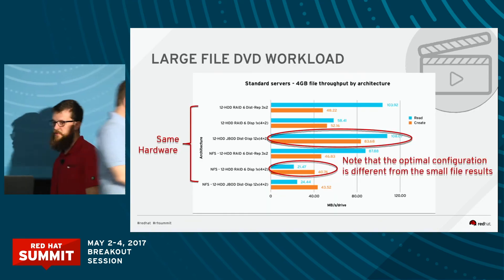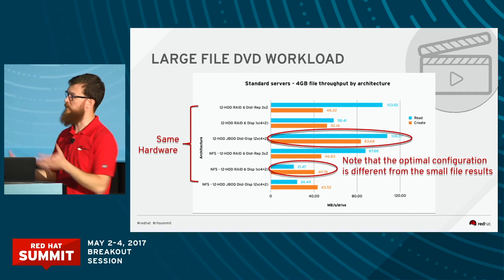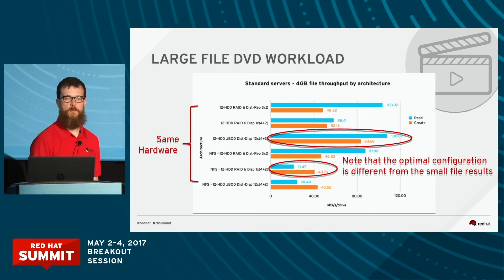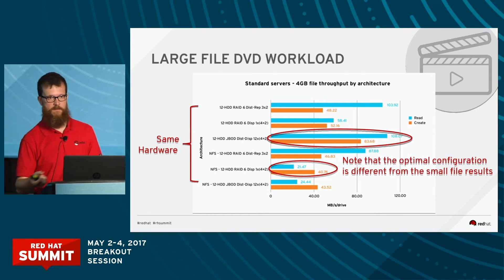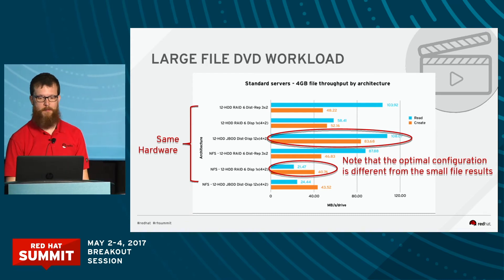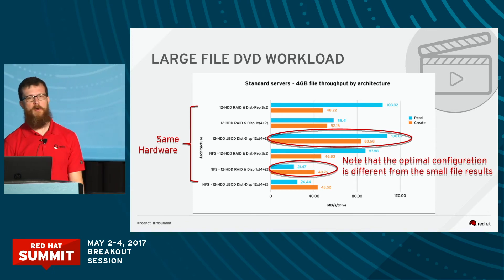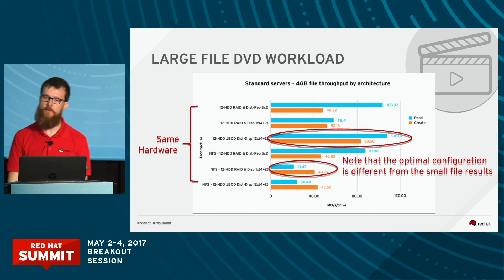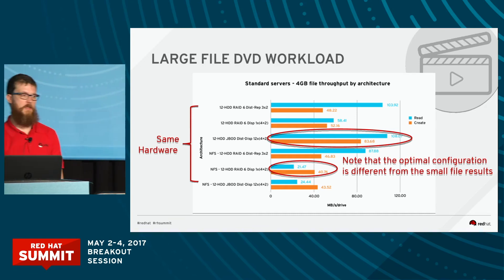Let's move on to large file. That second scenario I talked about early on was the same set of servers configured a different way for a different workload. What we actually find, interestingly, is that for this large file, four-gigabyte workload, with enough concurrency to saturate the system, our dispersed volumes are actually giving us the best overall performance — which is interesting, because we think of erasure coding as something that adds overhead. But from a performance efficiency standpoint, considering saturating the system, the erasure coded volume is actually giving us the best efficiency configuration.